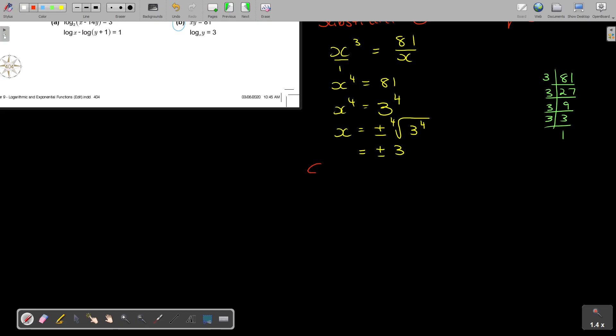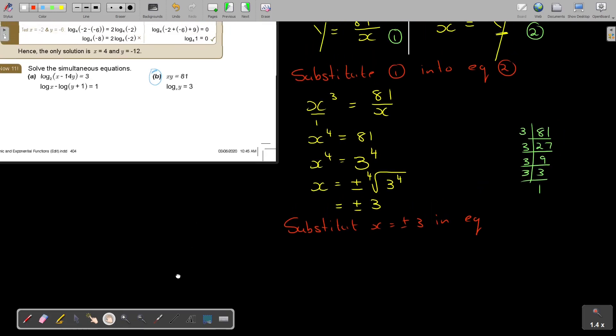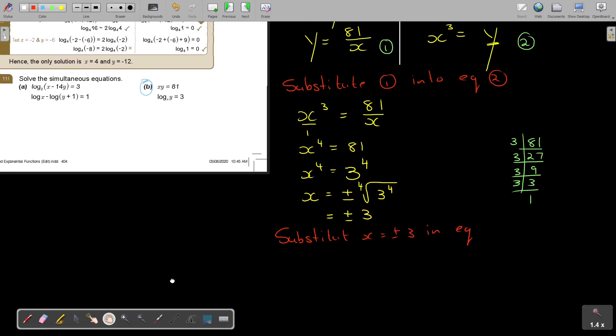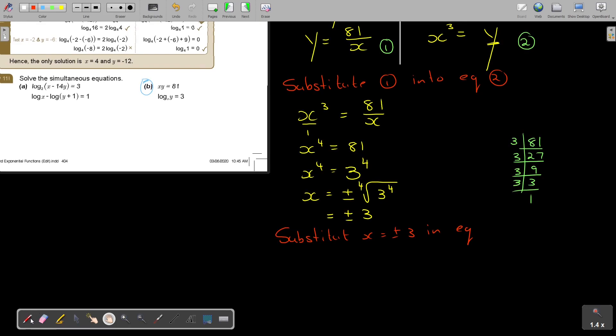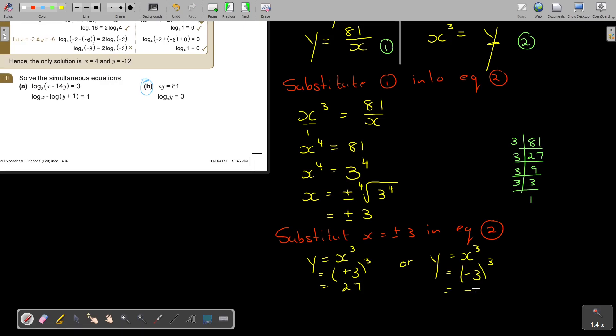Now, substitute x equals plus minus 3 in equation. And let's see what equation will work nice. Doesn't matter which one, both will give you the same. I'm looking for y in equation 2. I think 2 is nice. But you can also substitute in 1. So basically, I'm getting then y is equal to x to the power of 3. So if it's positive 3, it's 27. Or y is equal to x to the power of 3. So if it's negative 3 to the power of 3, then it's negative 27.